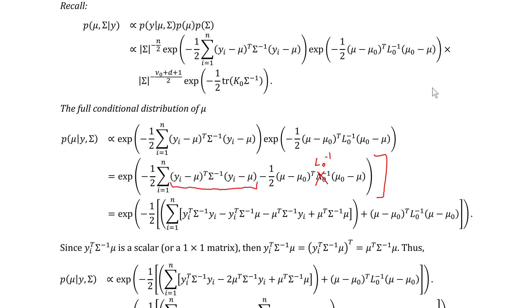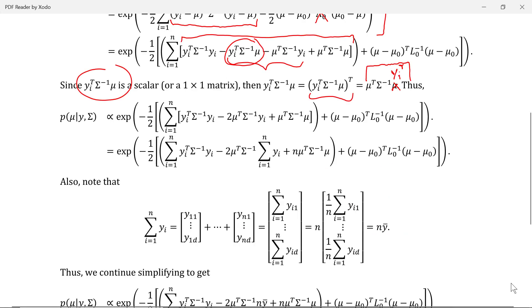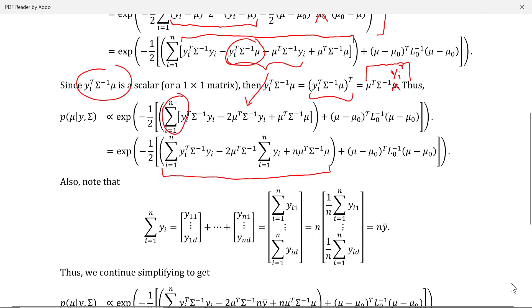Note that the lambda-naught inverse should actually be an L-naught inverse. We then expand this product to get this sum here. We can actually combine these two terms. Since y-i transpose sigma-inverse mu is a scalar or 1-by-1 matrix, it equals its transpose, which becomes mu-transpose sigma-inverse y-i transpose. After taking the transpose of the first term, we combine the two terms to get negative 2 mu-transpose sigma-inverse y-i. We then distribute the sum to get the updated expression here.